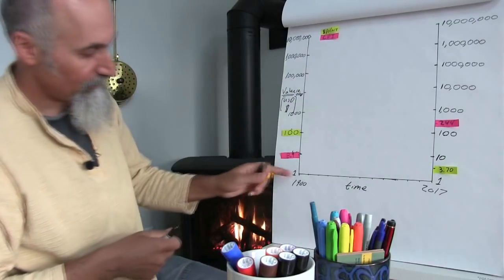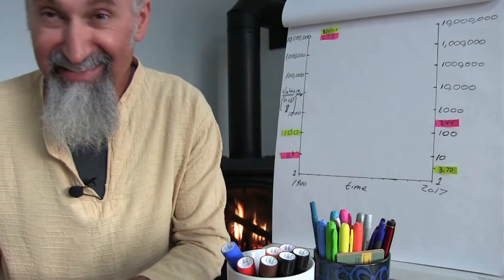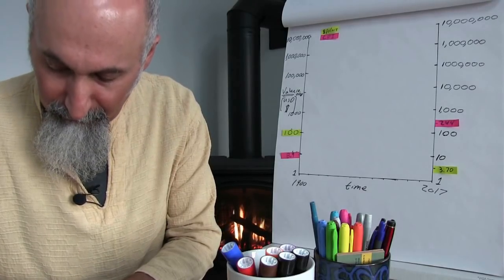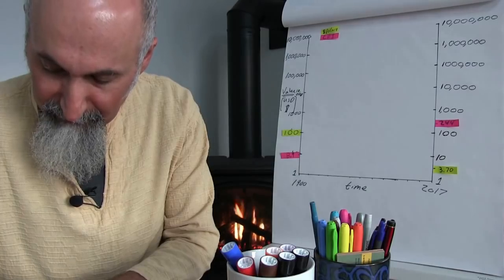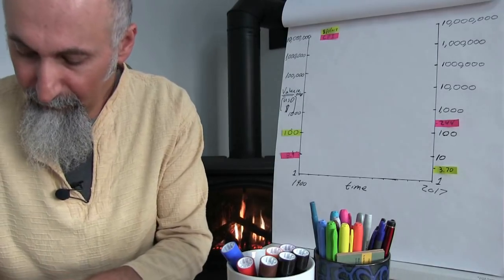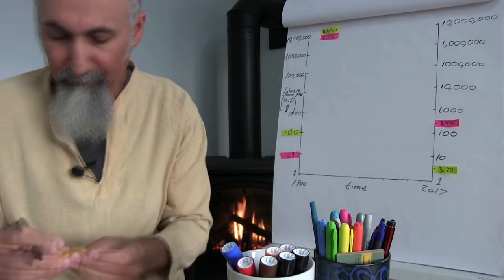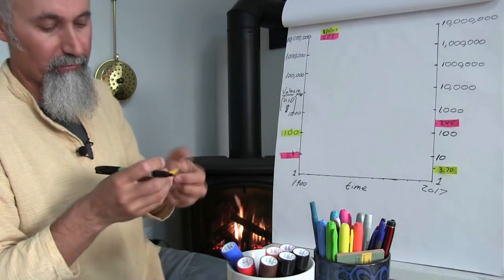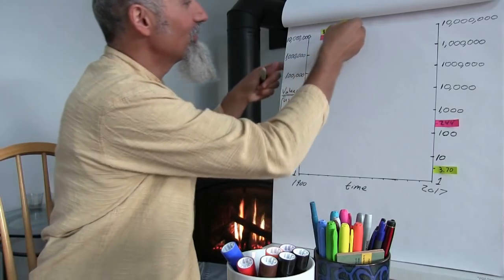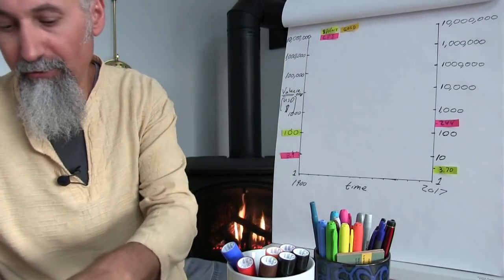In 1900, gold was $20.67. I'm going to put this $20.67 on the graph using the gold marker.